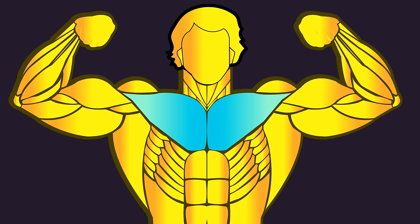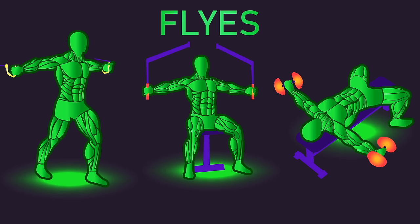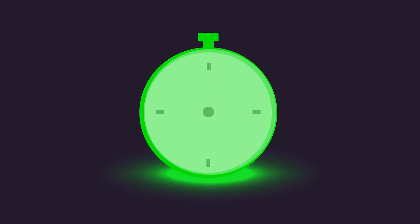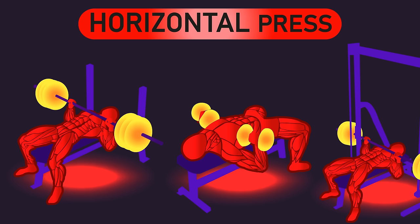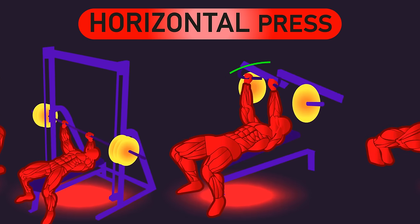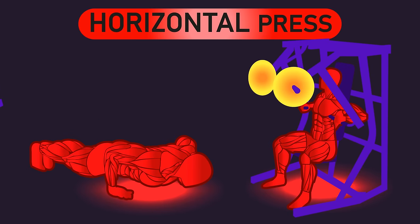Your first thought may be that all fly exercise variations do this — and indeed, that's true. However, these are isolation exercises to be dissected later. Right now, we'll focus on horizontal pressing exercises, which involve all bench pressing variations including with the barbell, dumbbell, Smith machine, and machine. Also, push-ups and seated machine chest presses fit into this category. All of these are compound exercises, and when pressing with a moderate to wider grip, they tend to involve shoulder horizontal flexion.